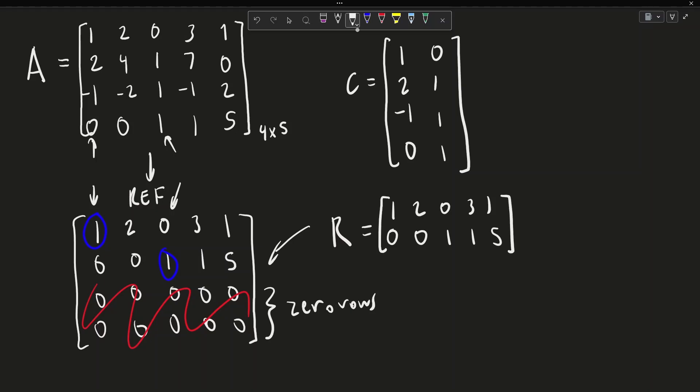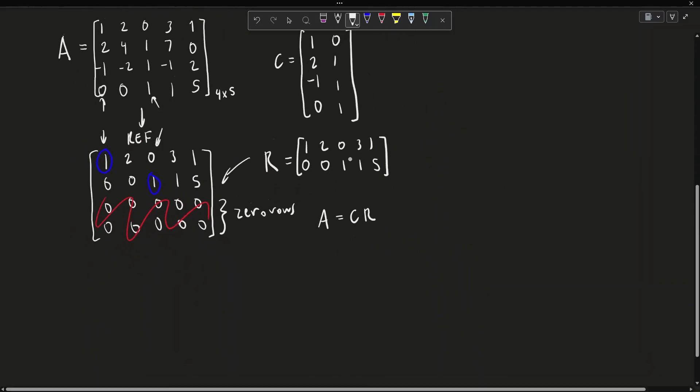And so what this means is that A can be represented as the multiplication of the matrices C and R. Let's demonstrate this by multiplying out C and R.